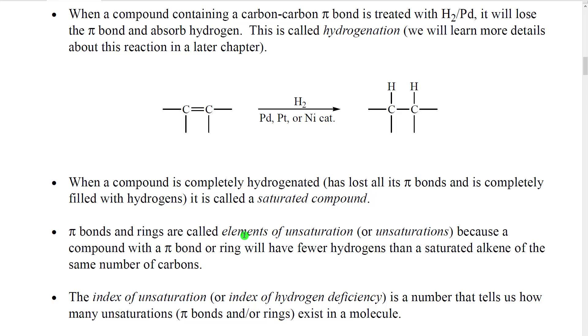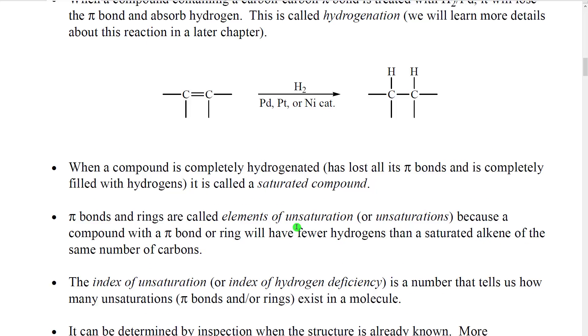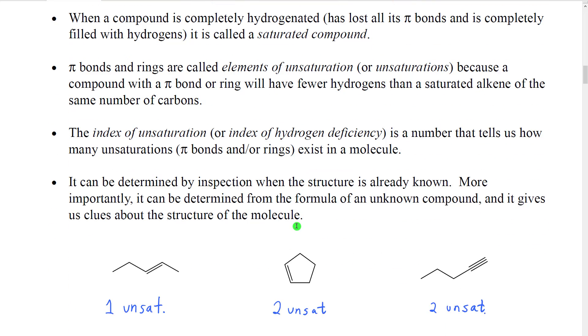Pi bonds and rings were called elements of unsaturation because a compound with a pi bond or a ring would have fewer hydrogens than the completely saturated equivalent. And so the pi bonds were causing the molecule to be unsaturated or not completely filled with hydrogens. The index of unsaturation then was a number that told us how many unsaturations existed in a molecule.